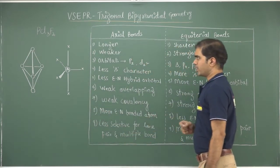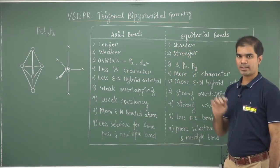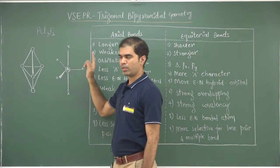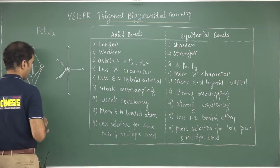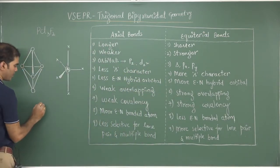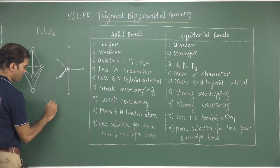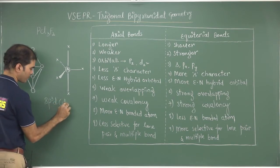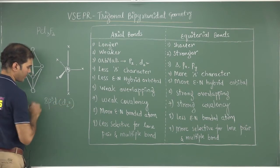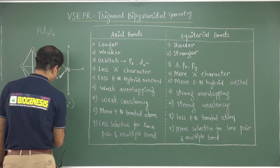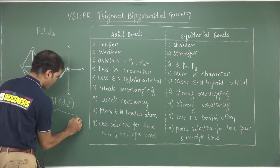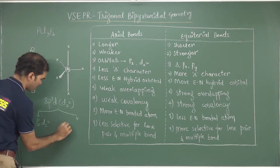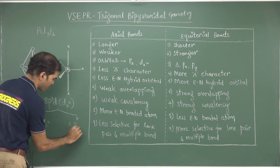To understand where fluorines or chlorines go, we need to understand the hybridization and how the orbitals are distributed. For trigonal bipyramidal geometry, the hybridization is SP³D, where the dz² orbital is involved. This SP³D can be classified into 2 different sets of orbitals: one set is Pz and dz², and the other set is S, Px, and Py.